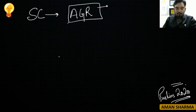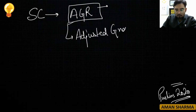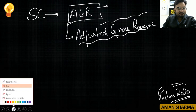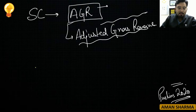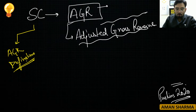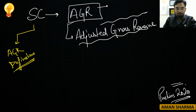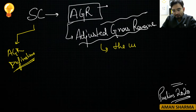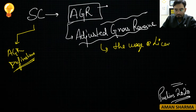What is AGR? How do we define AGR — Adjusted Gross Revenue? It is the usage and licensing fee that telecom operators pay to the Government of India, or the Department of Telecommunications.